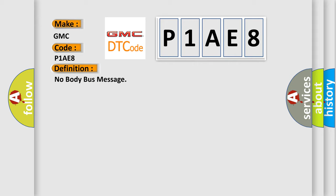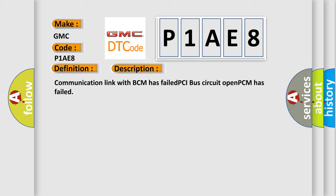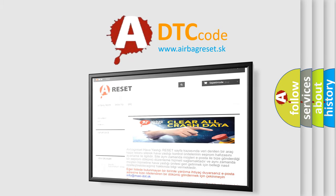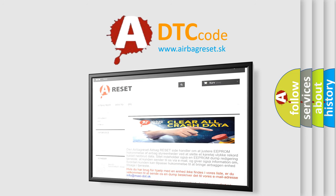And now this is a short description of this DTC code. Communication link with BCM has failed, PCI bus circuit open, PCM has failed. The airbag reset website aims to provide information in 52 languages. Thank you for your attention and stay tuned for the next video.